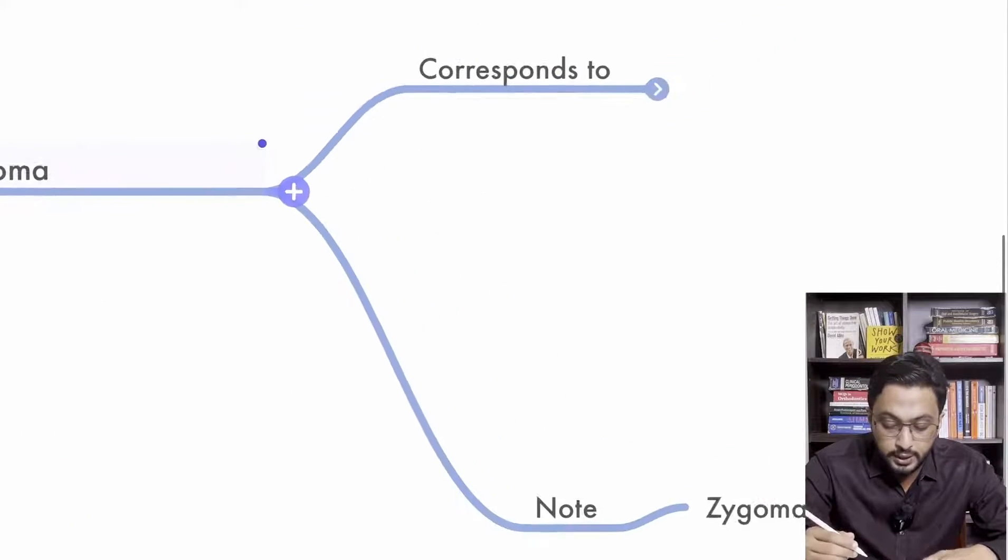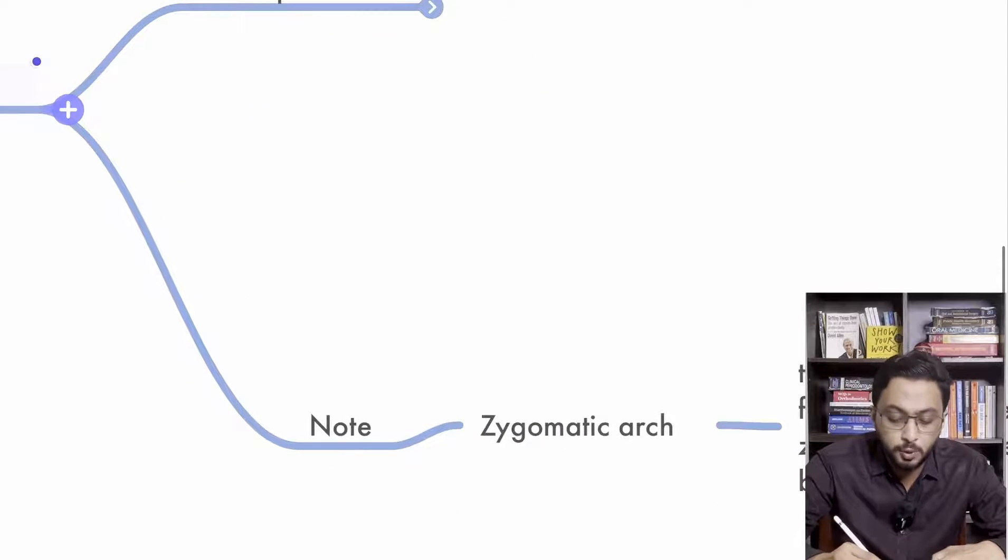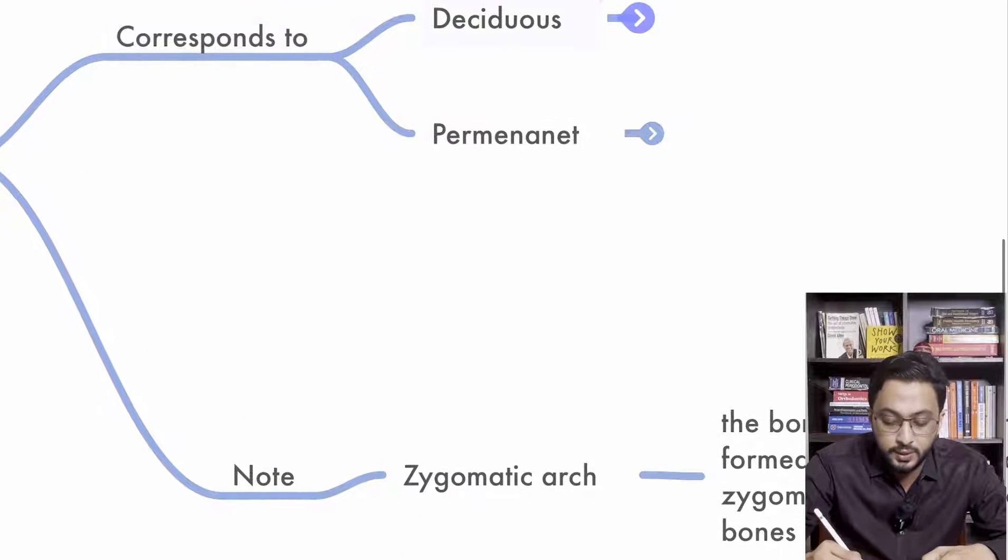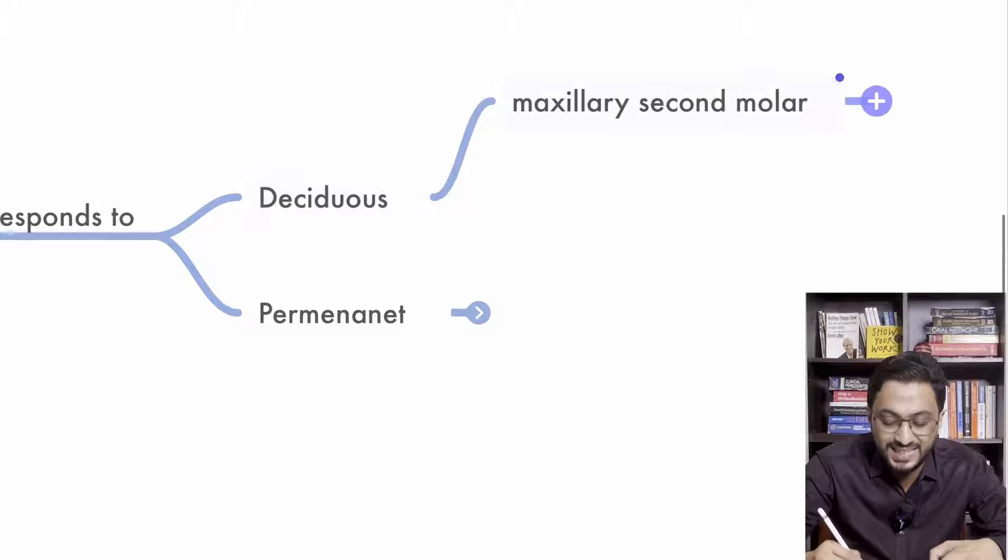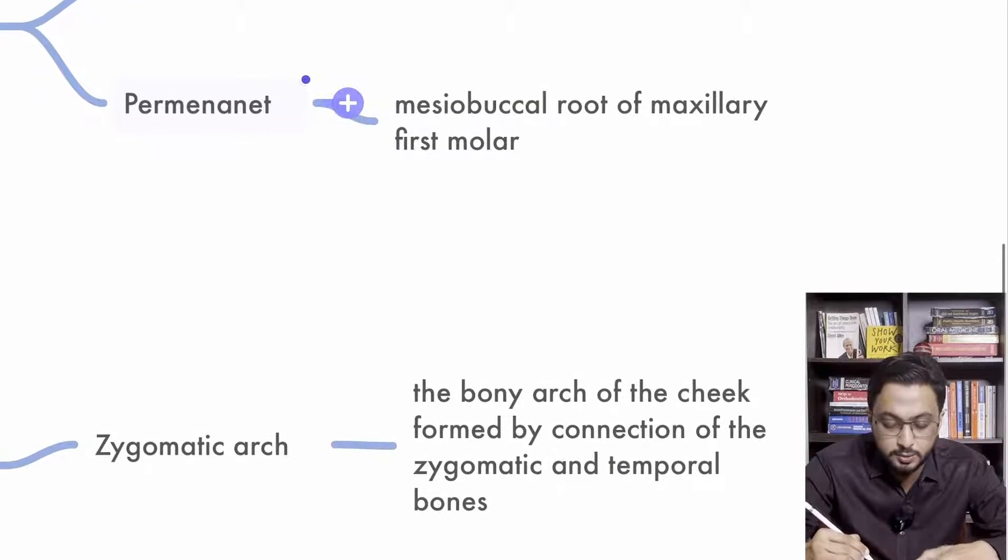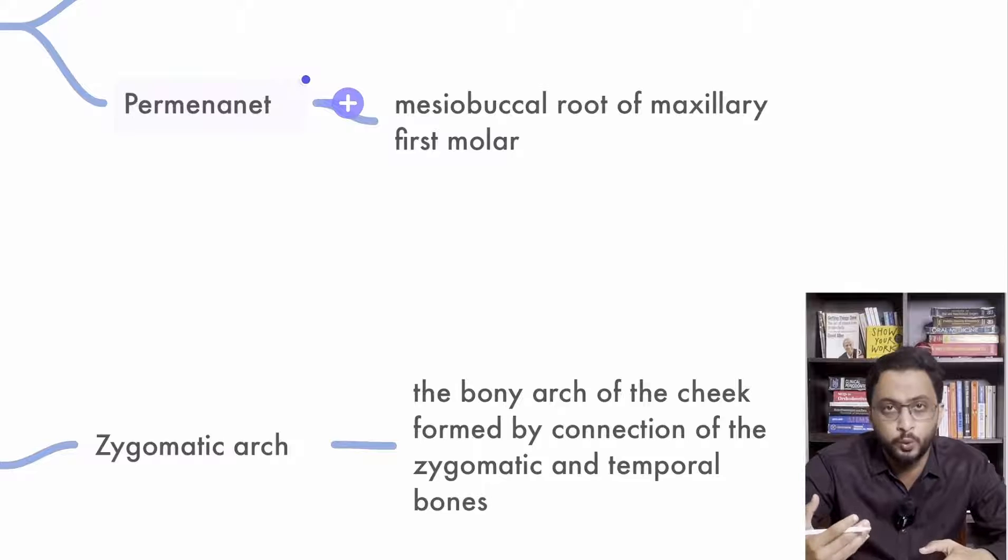Now a few more things to know here. As I have told you, it corresponds to what? In deciduous dentition, it corresponds to the maxillary second molar, and in permanent dentition, it corresponds to a mesio-buccal root.